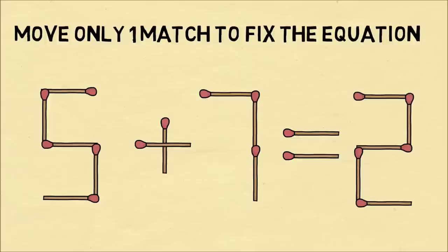So here's the trick where you move this one match from the plus sign to make a 9. So now we have 9 minus 7 equals 2. And that's, of course, correct.